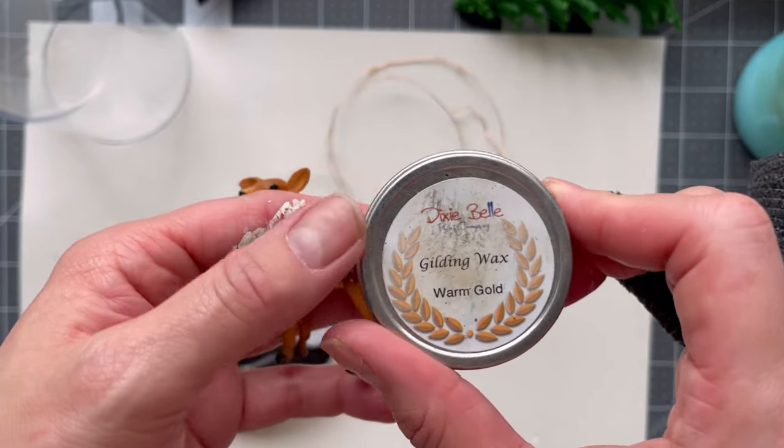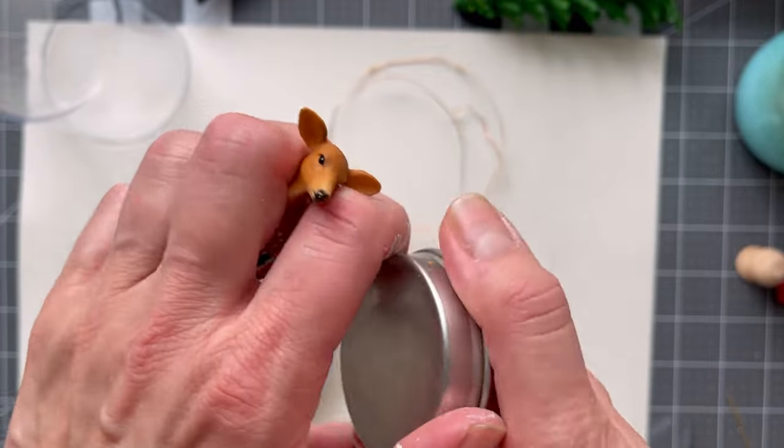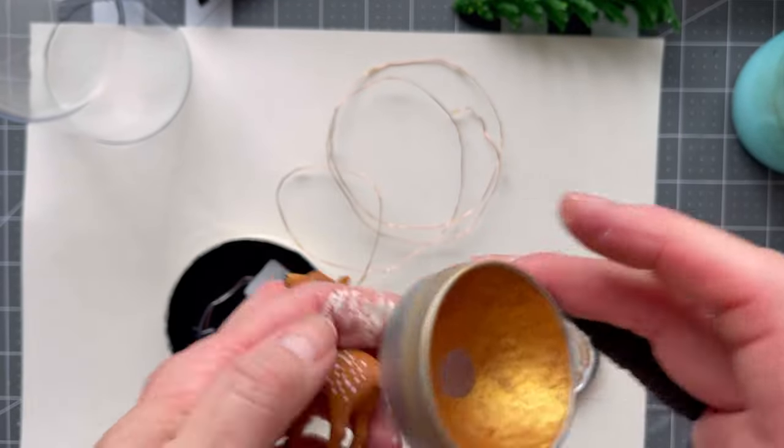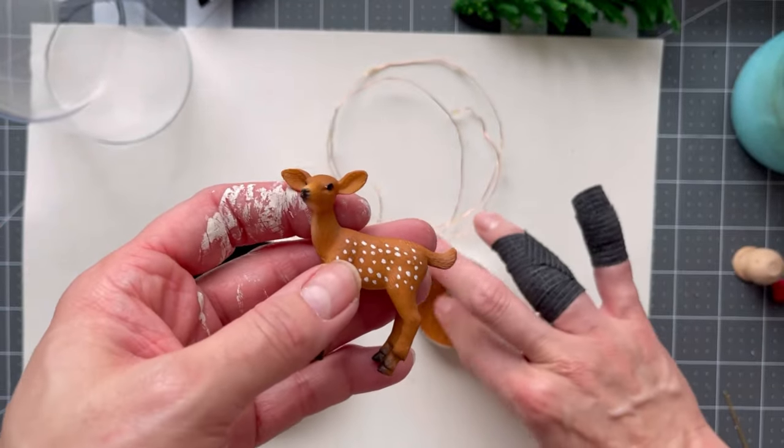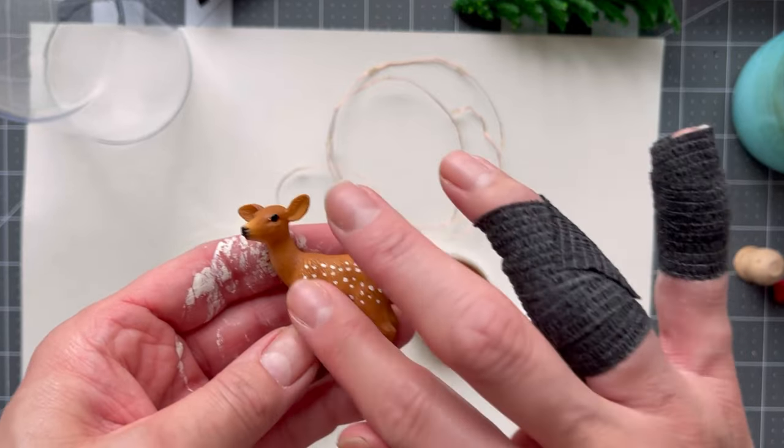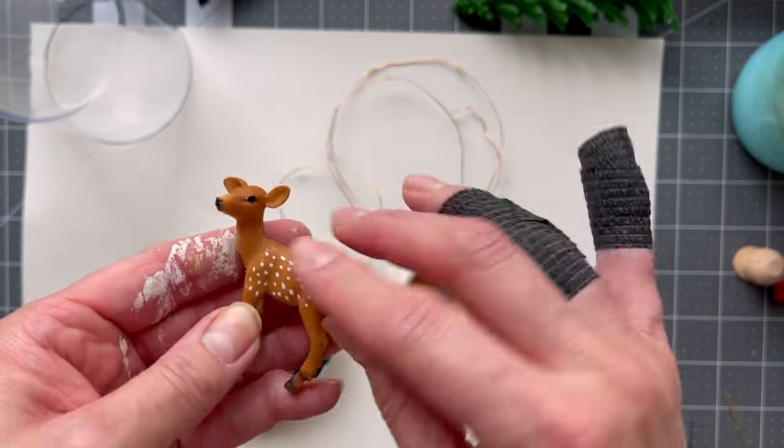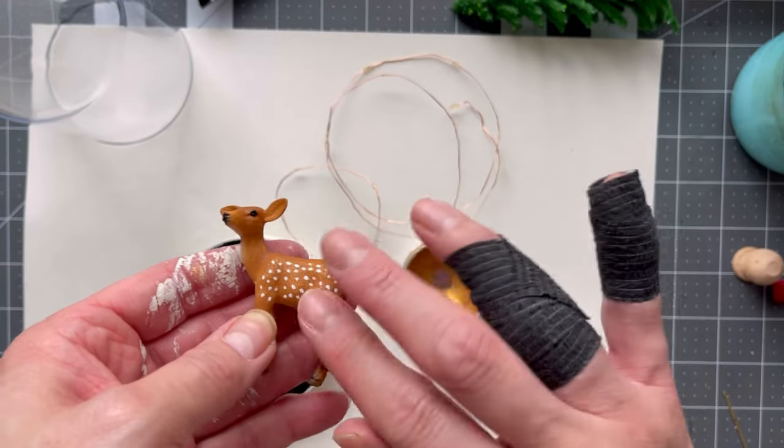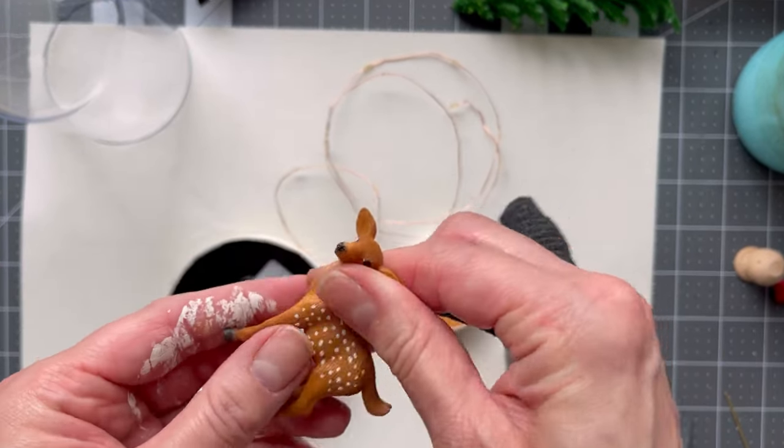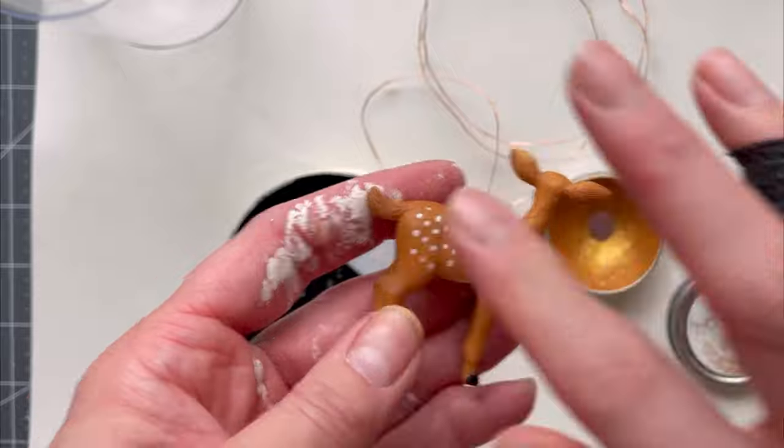I got this tiny deer from Hobby Lobby in their miniature section, adding a little bit of gold sheen with Dixie Bell's warm gold wax. A little hard to see in the video but it does add this cute little shine to this deer.